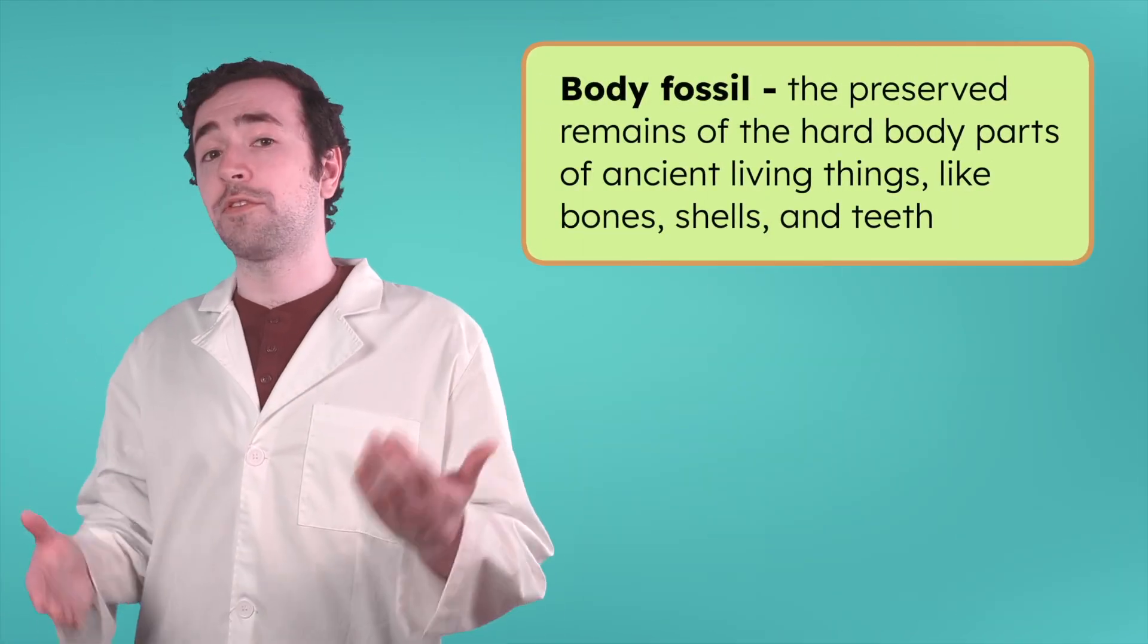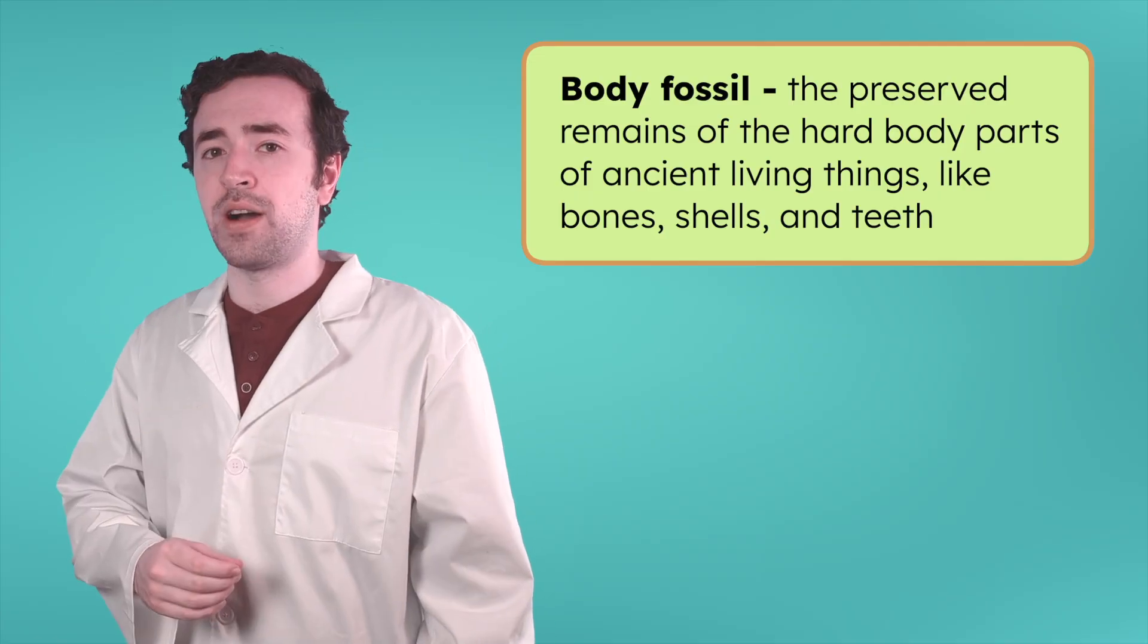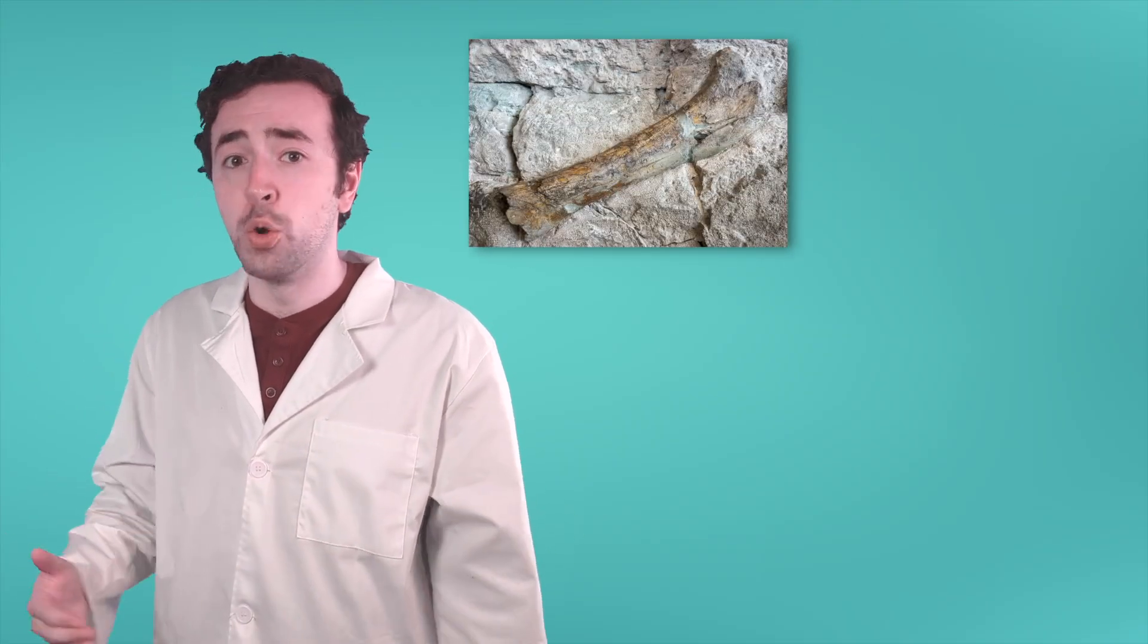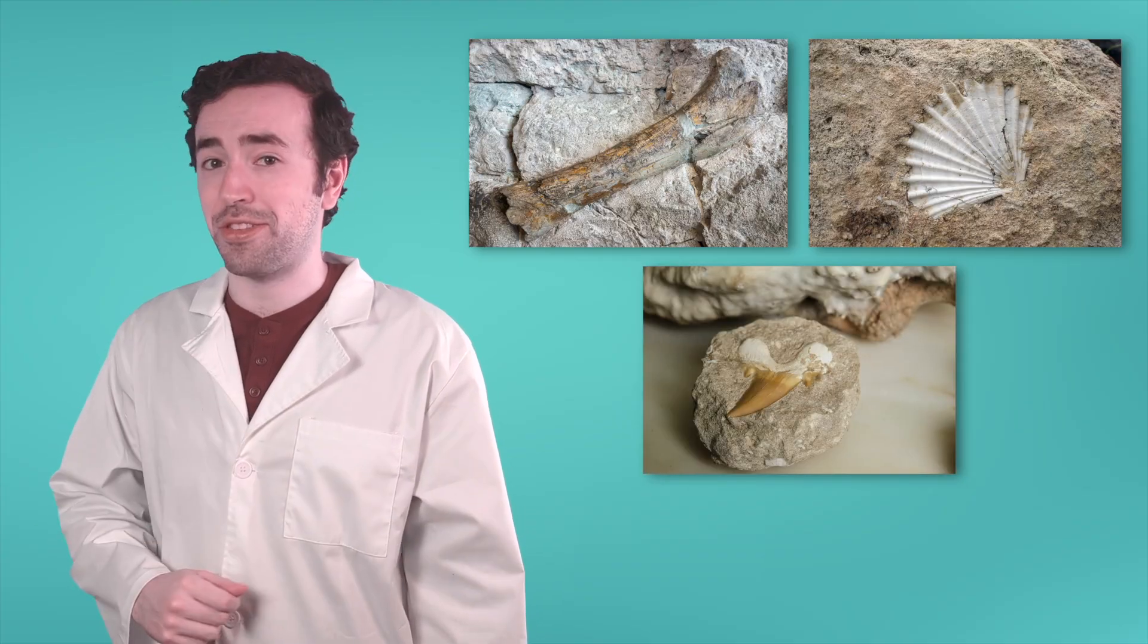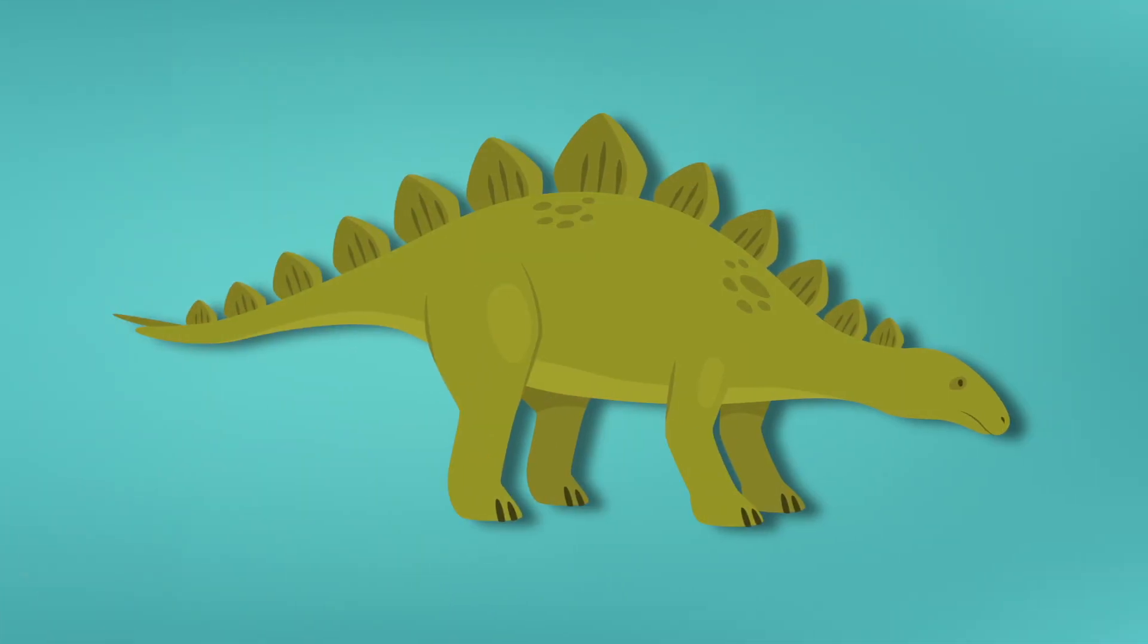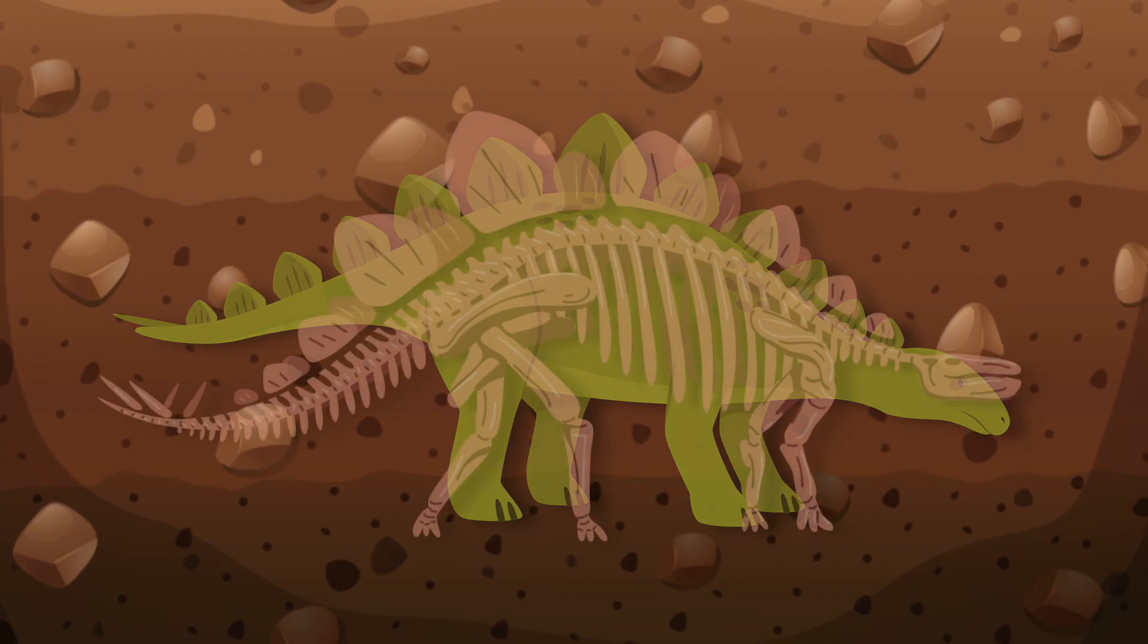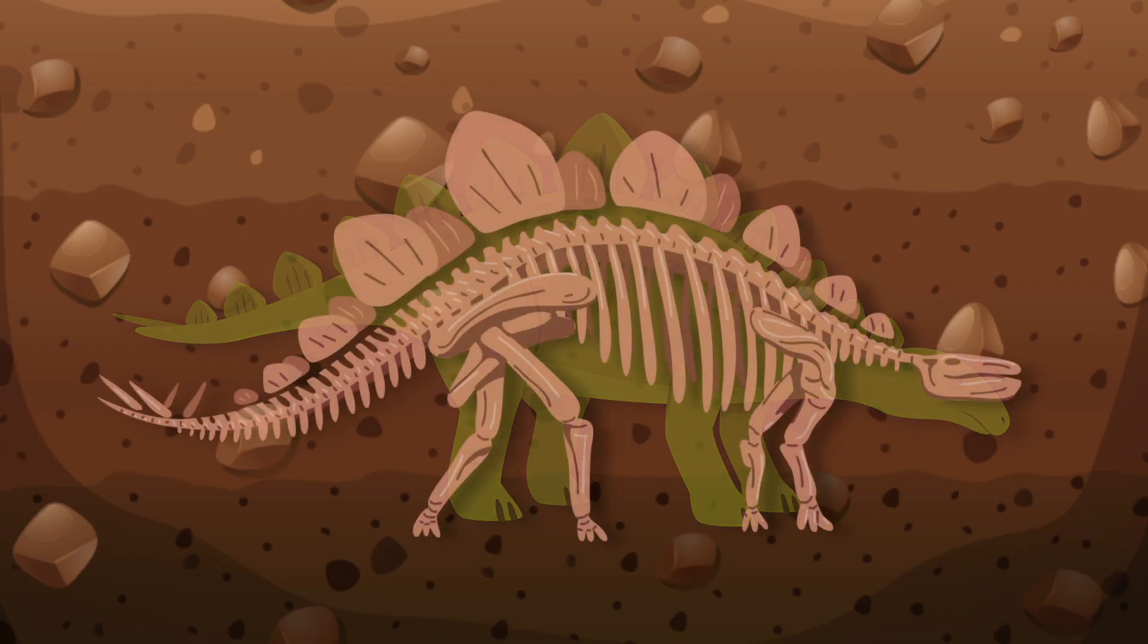One type of fossil that forms this way is a body fossil, the preserved remains of hard body parts like bones, shells, and teeth. For a body fossil to form, a plant or animal needs to be buried by sediments super quickly, before it has a chance to decay. This usually happens in places like rivers or oceans, where sand and mud can quickly cover the remains.